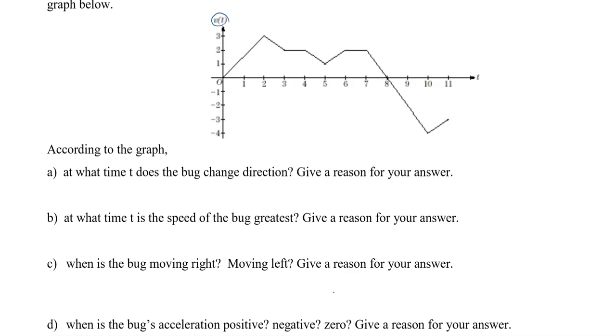The first one here is, at what time t does the bug change direction? The bug changes direction when the velocity changes from positive to negative or negative to positive, because we know that means it was going right and then left or left and then right. So, this happens at the 8-second mark.